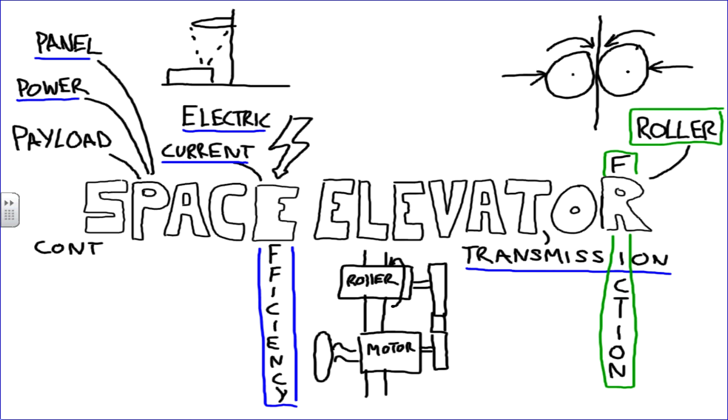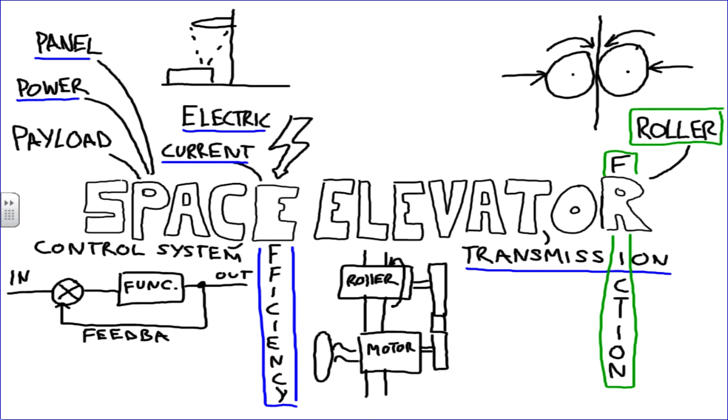Now let's move on to the control system which we already mentioned in part 1. There it was said that it is necessary to compensate for vibration. But the control system does much more, as it is there to control the speed and position of the climber. When living beings are on board the space elevator, it is also necessary to provide them with the necessary favorable living conditions.